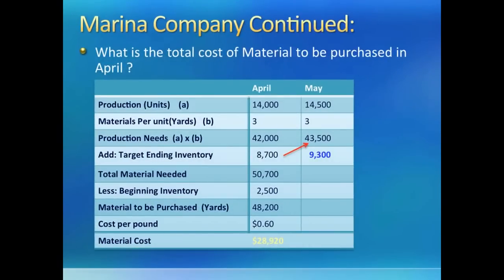We start with April production multiplied by the raw material needed for each unit to get the total raw material needed for April. Then we add the target inventory, which we know is 20% of next month's material needs. We do a small side calculation for May raw material needs and take 20% of it, giving us 8,700 yards of target ending inventory.